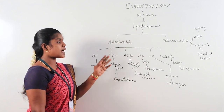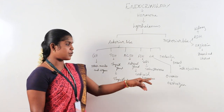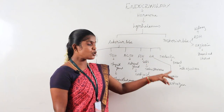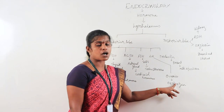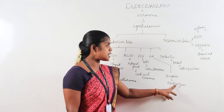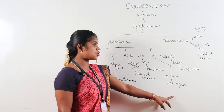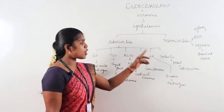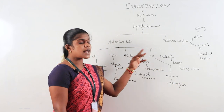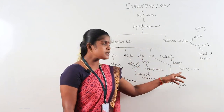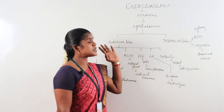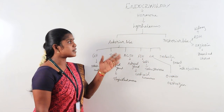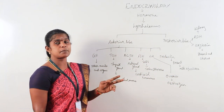LH, the luteinizing hormone, acts on the ovaries and is involved in the production of sex hormones — estrogen and progesterone. Prolactin acts on the breast and is involved in the milk ejection process.